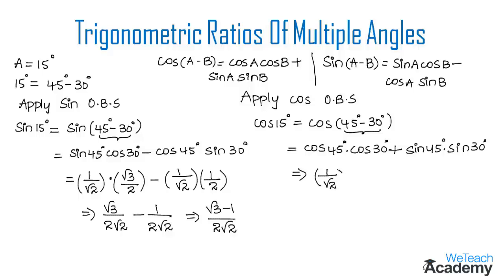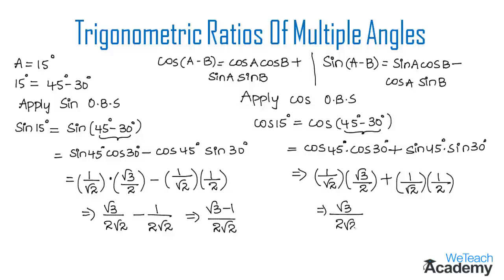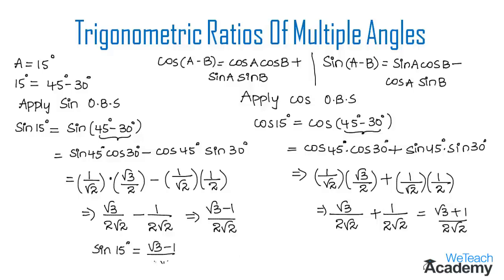Substituting all the values: cos 45° is 1/√2, cos 30° is √3/2, sin 45° is 1/√2, and sin 30° is 1/2. Multiplying gives √3/(2√2) plus 1/(2√2). Since we have common denominators, we get (√3 + 1) / (2√2). So sin 15° = (√3 - 1) / (2√2) and cos 15° = (√3 + 1) / (2√2).